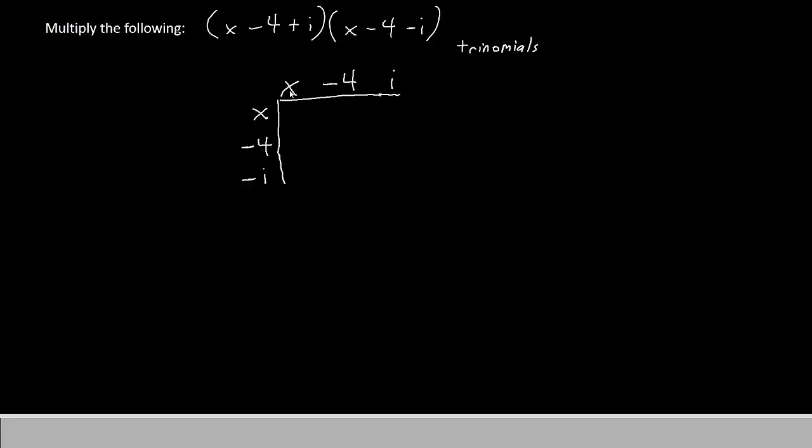We'll go x times x is simply x squared. x times negative 4 is negative 4x. x times i is ix.